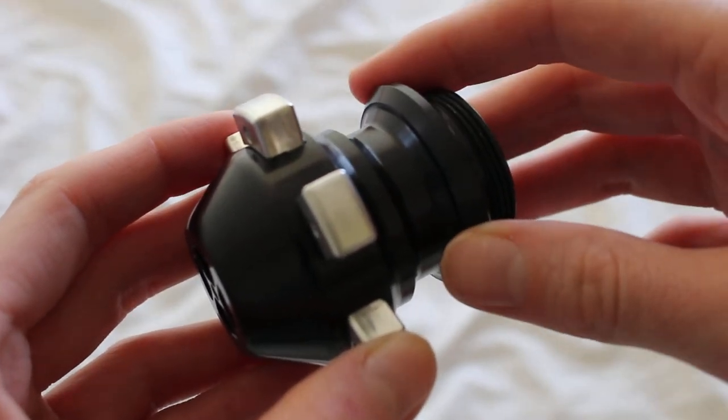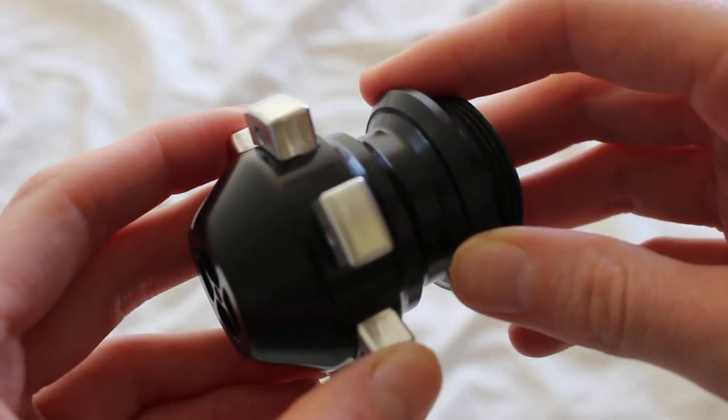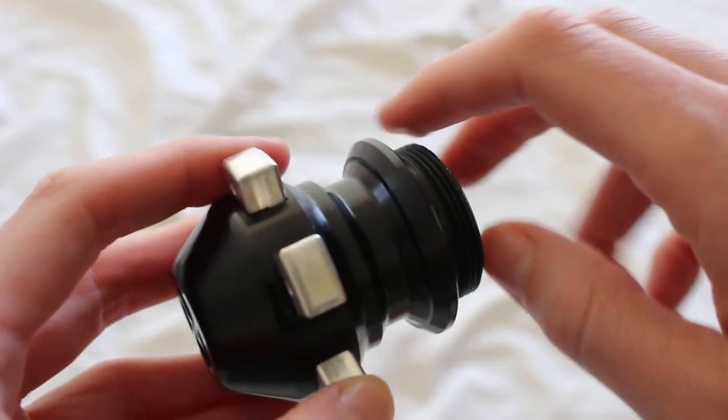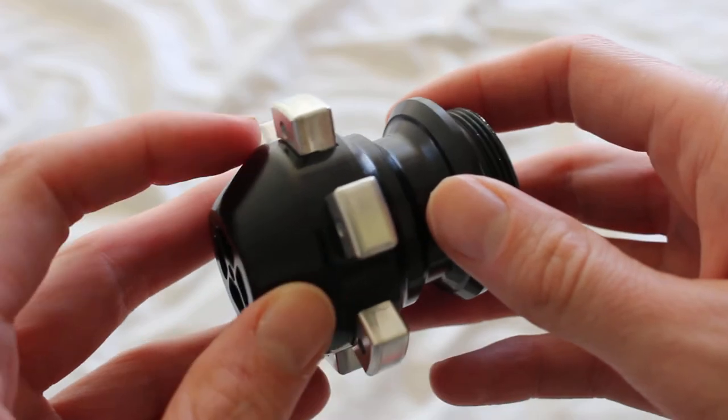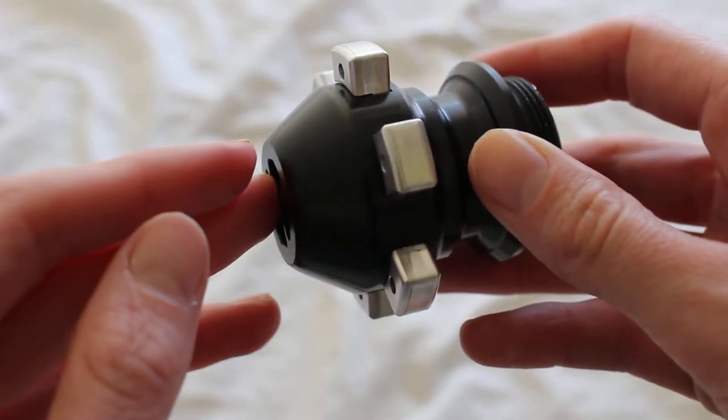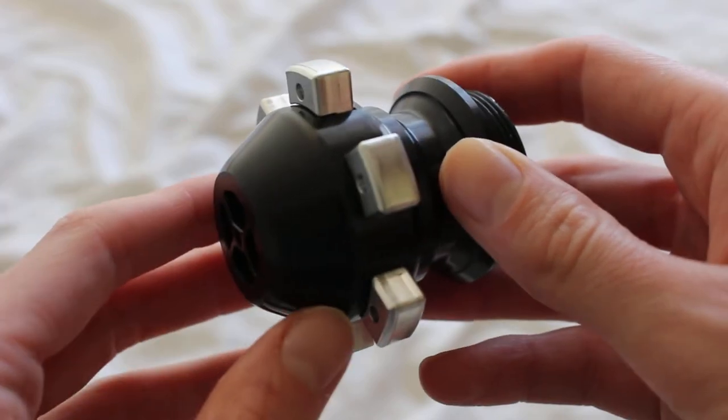This is an Ultrasabers Guardian pommel, and it comes in two versions: an MHS-compatible version and a replacement version, which is designed specifically for sabers with a 1.725 outside diameter.